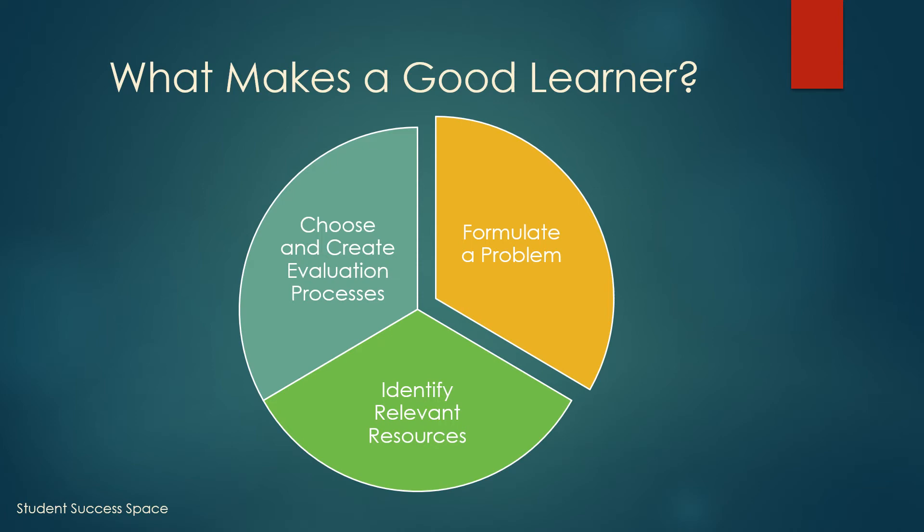What makes a good learner? A good learner does three things. First, they know how to formulate a problem and create a hypothesis. Second, they can identify relevant resources. And lastly, they are able to choose and create an evaluation process.